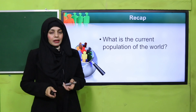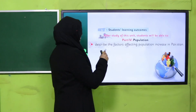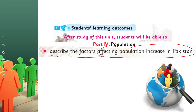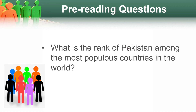The current world population is 7.8 billion. In today's lecture, students will be able to describe the factors affecting the population increase in Pakistan — kin wajuhat ki bena per Pakistan ki population mein itna rapid increase hai, we will discuss that today. Can you tell me the rank of Pakistan among the most populous countries in the world? Pakistan is a very small part of land, yet it is ranked 5th as the most populous country in the world.